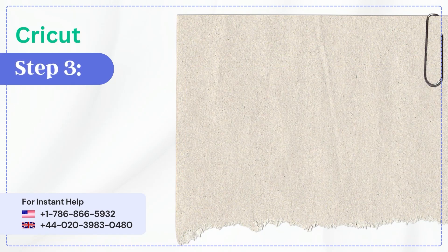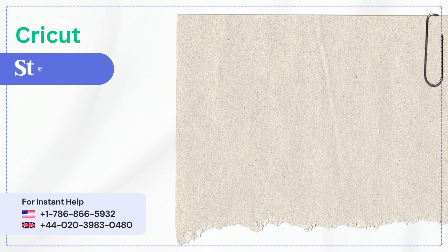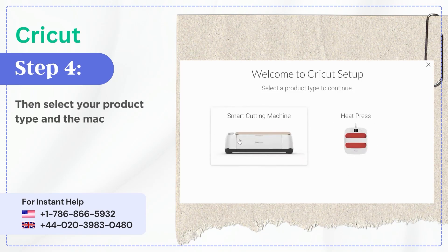Step 3: In the Cricut Design Space window, click on product setup. Step 4: Then select your product type and the machine.